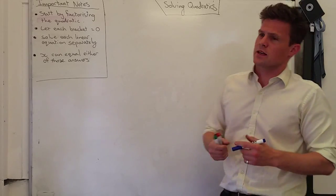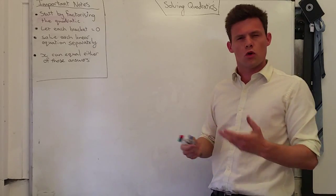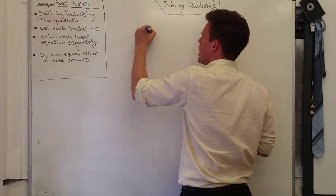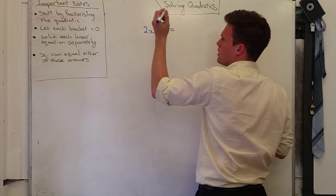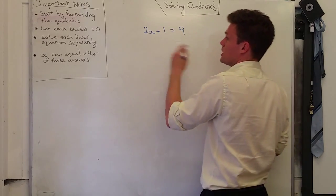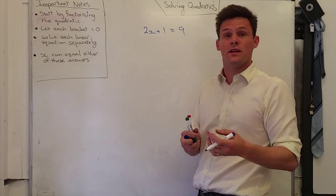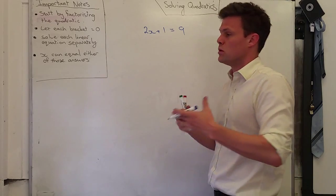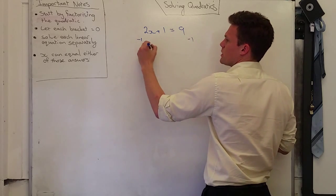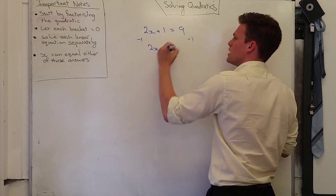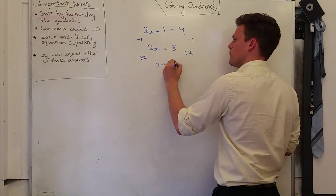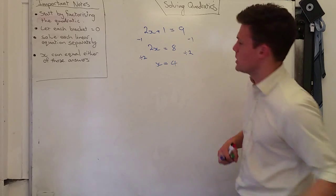Solving quadratics is pretty much like solving normal equations. If I had 2x plus 1 equals 9, something like that, you should be able to solve that. It's pretty easy. If you haven't, have a look at my solving of linear equations. Obviously, I'm going to subtract 1 from both sides, so I end up with 2x equals 8, and then I divide both sides by 2, x equals 4. So you should be familiar with that.